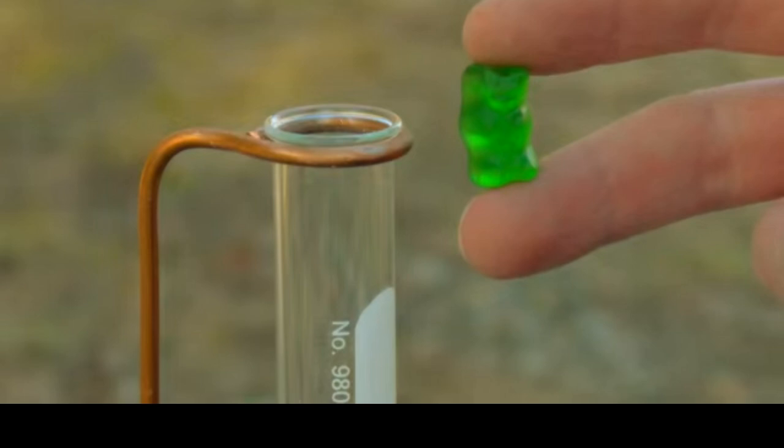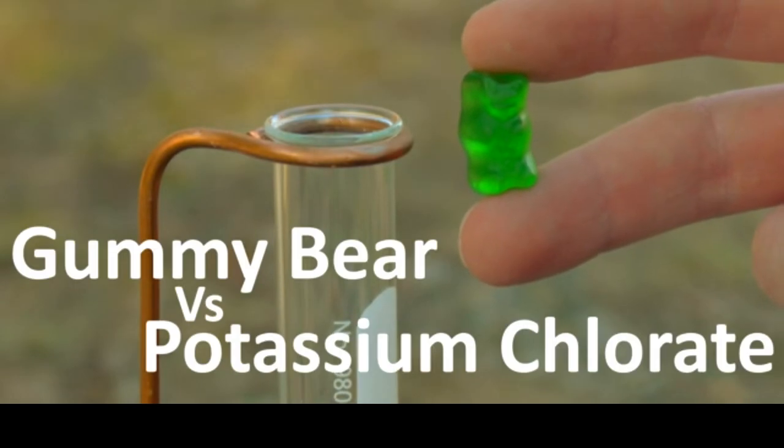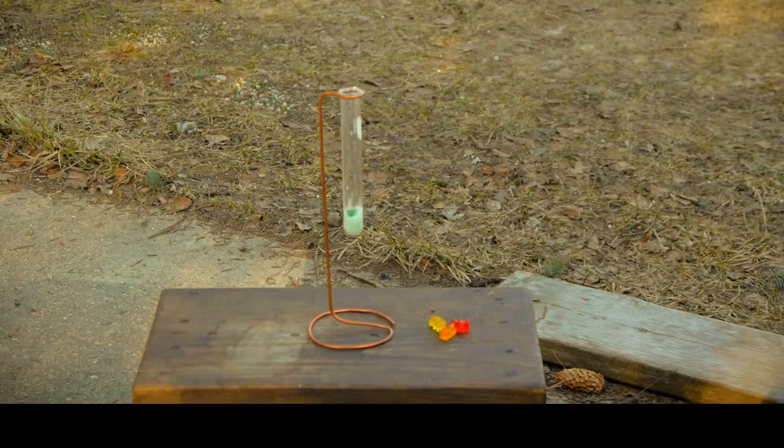Potassium chlorate has a formula of KClO3. They've heated it up, they've allowed it to melt, and now they're going to drop the gummy bear in there. Let's see what happens. Gummy bear versus potassium chlorate.